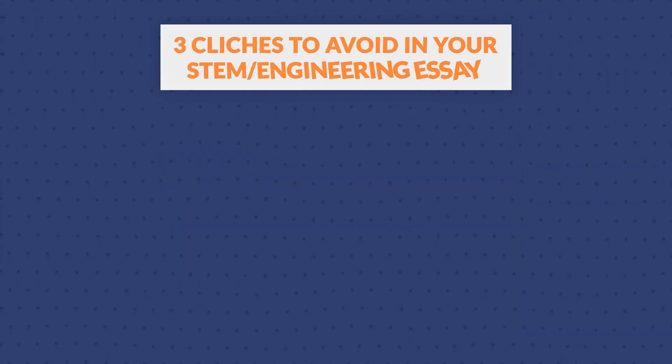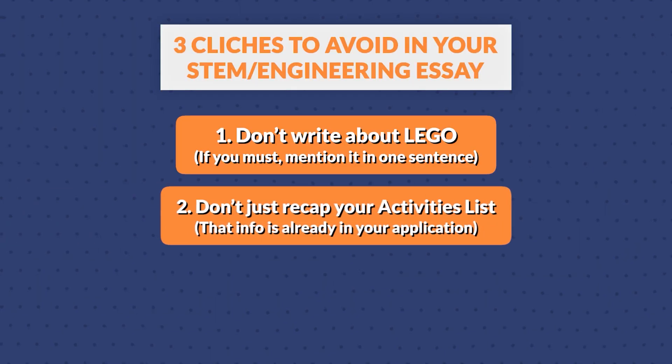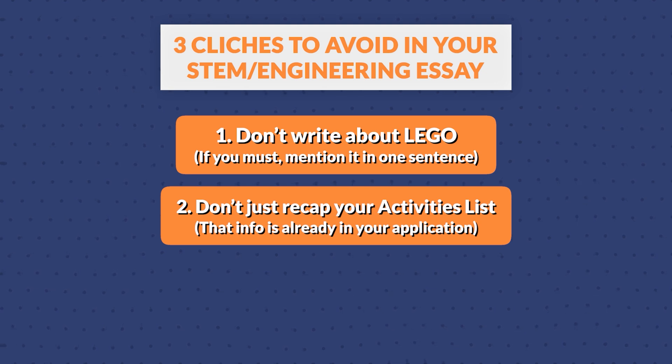First, I wouldn't say talk about Lego in your essay, because most students do this when writing about STEM and engineering. Or if you're going to do it, mention it in one sentence and move on. Number two, maybe don't rehash your activities list — your activities are already in your application, so if you just say it again, they're kind of like 'yeah, we know.'